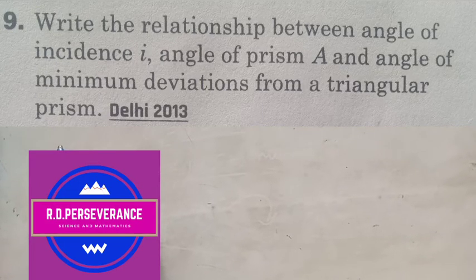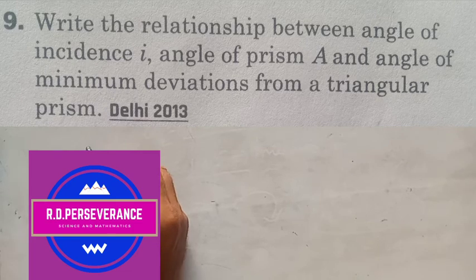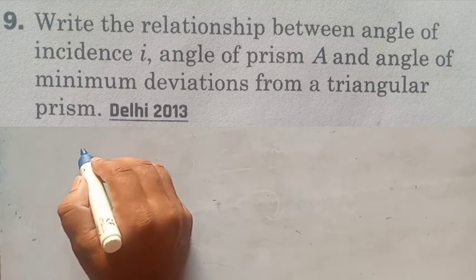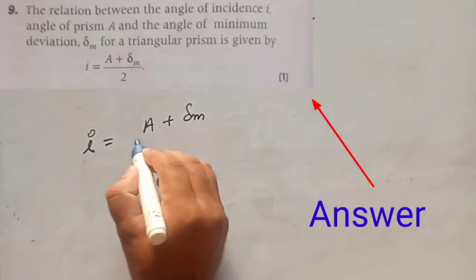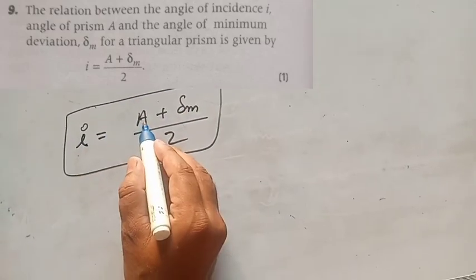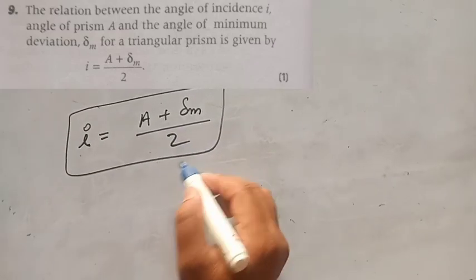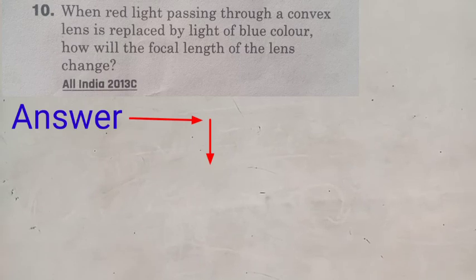This is the relationship between angle of incidence i, angle of prism A, and angle of minimum deviation from a triangular prism. The relation is i equals A plus delta m divided by 2, where i is the incident angle, A is the angle of prism, delta m is the minimum deviation, and this is divided by 2. This is the relation.